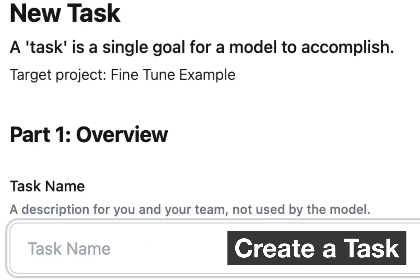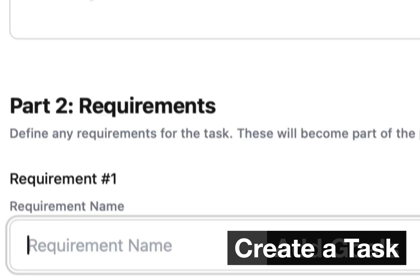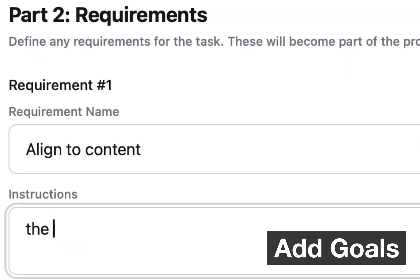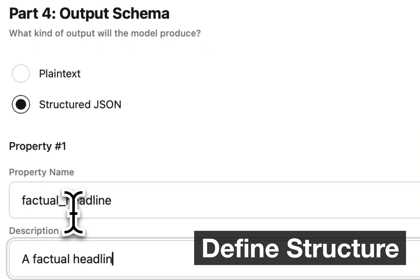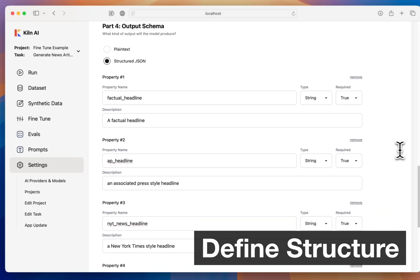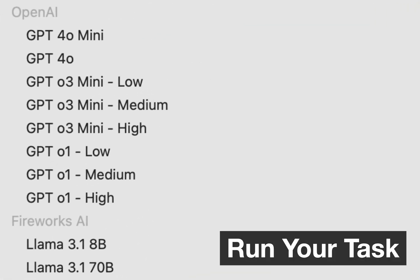Kilm makes it easy to define what your model should do. You can create a task by writing its goal, add requirements for improving its quality, and even define the structure of its input and output data.